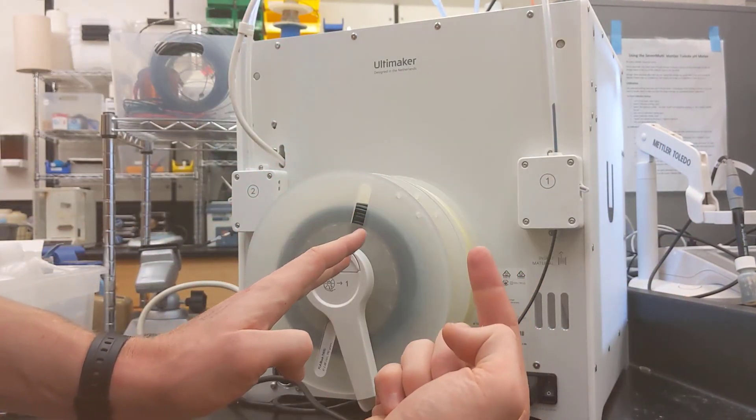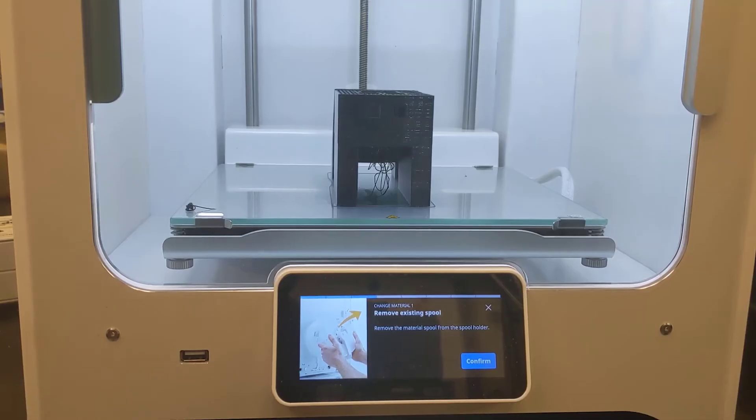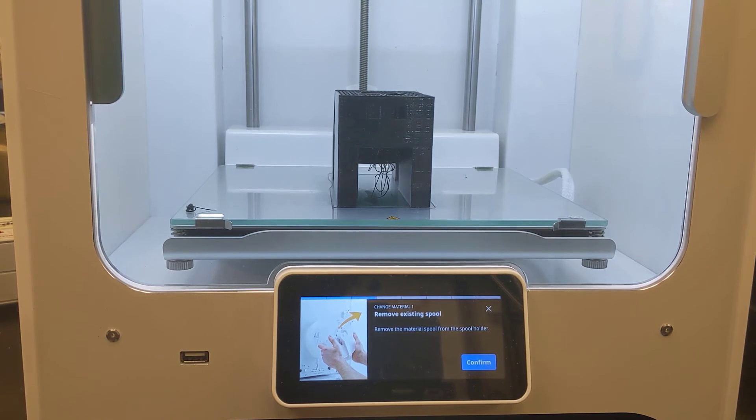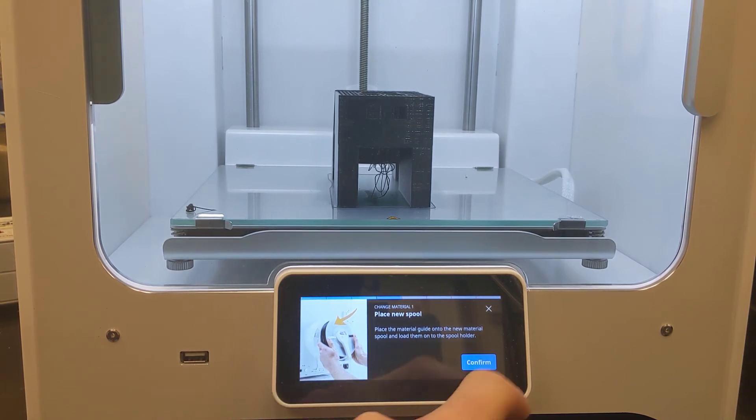Okay, so the machine's been spun around, and you can see we're still left with the prompt remove the existing spool, and now I can confirm that because we removed it. Place new spool. It says place the material guide onto the new material spool and load them onto the spool holder. It gives you an image of what that looks like, but I just walked you through that. So we just did that. I'm going to click confirm.